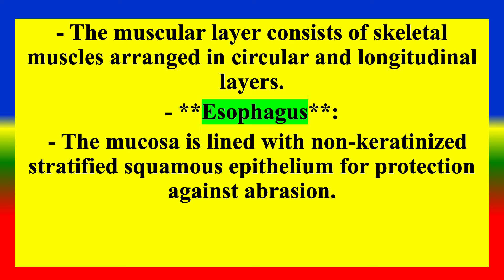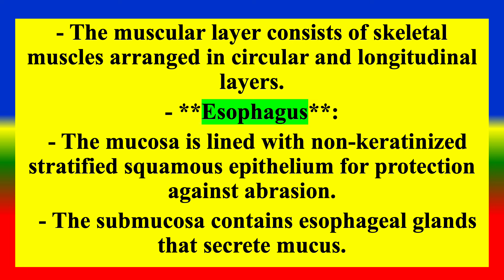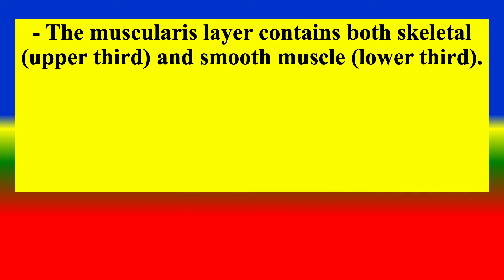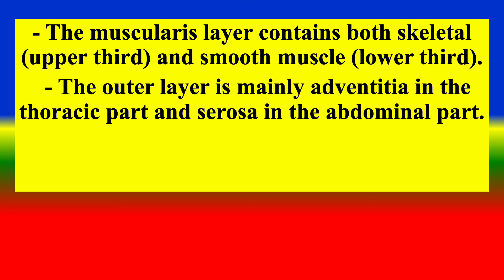Histological Structure — Esophagus: The mucosa is lined with non-keratinized stratified squamous epithelium for protection against abrasion. The submucosa contains esophageal glands that secrete mucus. The muscularis layer contains both skeletal and smooth muscle. Mainly adventitia in the thoracic part and serosa in the abdominal part.